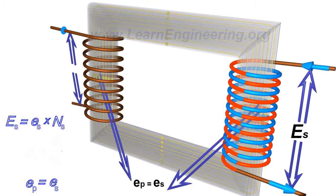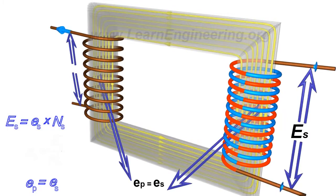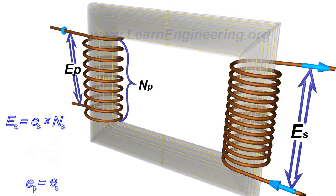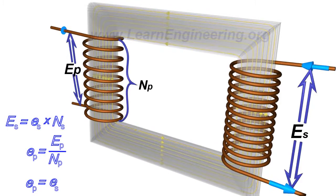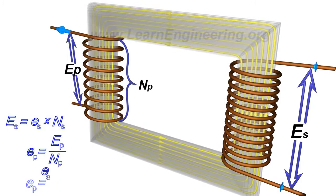The EMF per turn for the primary coil is related to the applied input voltage as shown. As a result, the induced EMF at the secondary coil is expressed as follows.